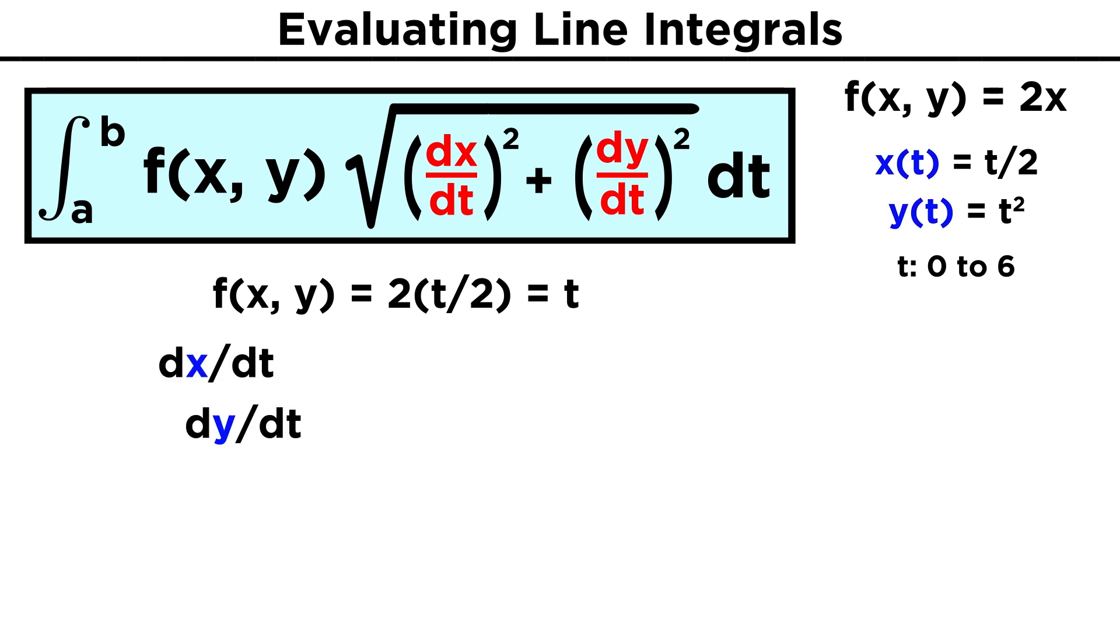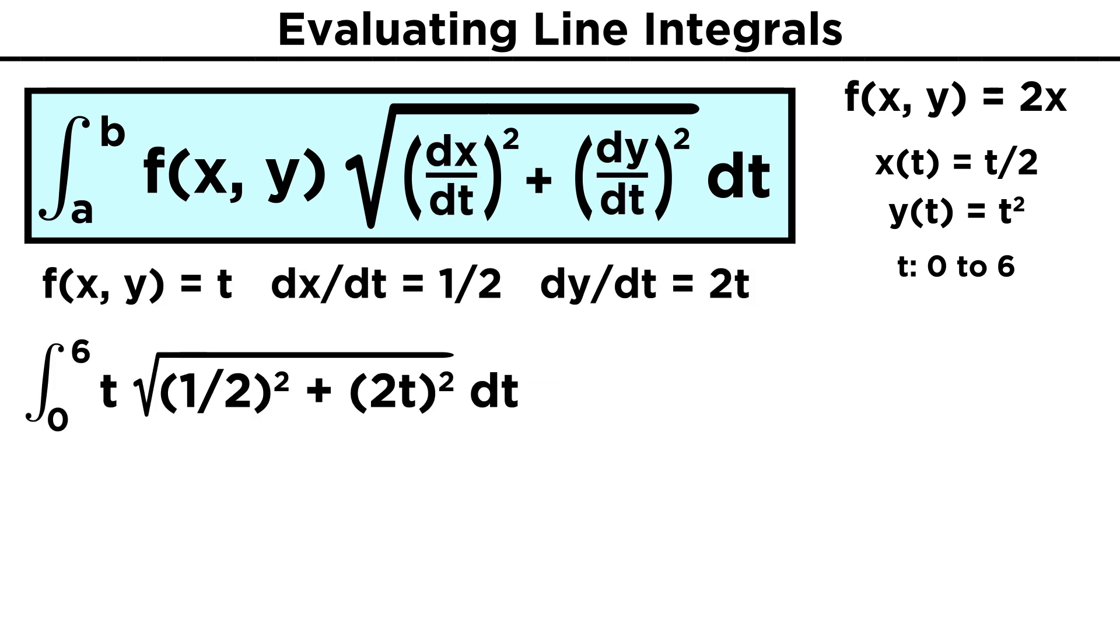Now we must get the terms dx dt and dy dt, which will just be the derivatives of the parametric equations. Differentiating x of t equals t over two, we get dx dt equals one half, and for y of t equals t squared, we get dy dt equals two t. Plugging everything in, our line integral becomes the integral from zero to six of t, root one half squared plus two t quantity squared, dt, which simplifies to the integral of t root one fourth plus four t squared, dt.